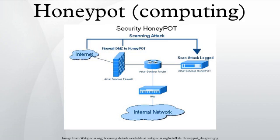Types: honeypots can be classified based on their deployment and based on their level of involvement. Based on deployment, honeypots may be classified as production honeypots or research honeypots. Production honeypots are easy to use, capture only limited information, and are used primarily by companies or corporations. They are placed inside the production network with other production servers to improve their overall state of security. Normally, production honeypots are low-interaction honeypots, which are easier to deploy, and give less information about the attacks or attackers than research honeypots do.